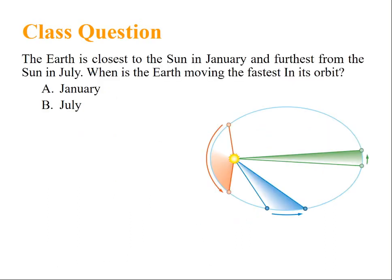Another class question: The earth is closest to sun in January and furthest from the sun in July. When is earth moving fastest in its orbit? The answer is definitely January. Please see the previous discussion.